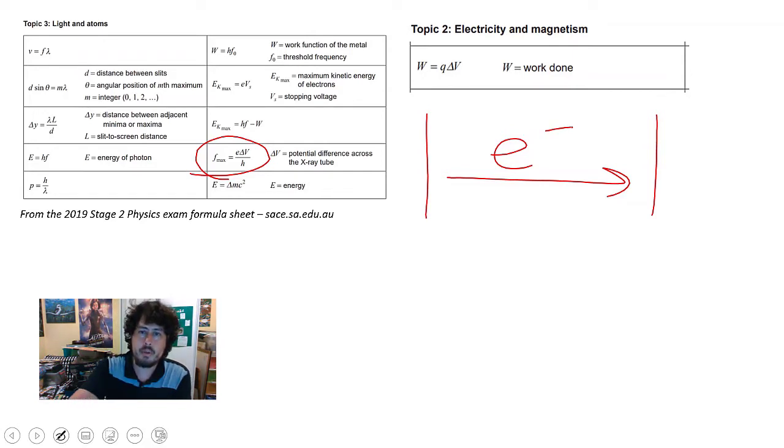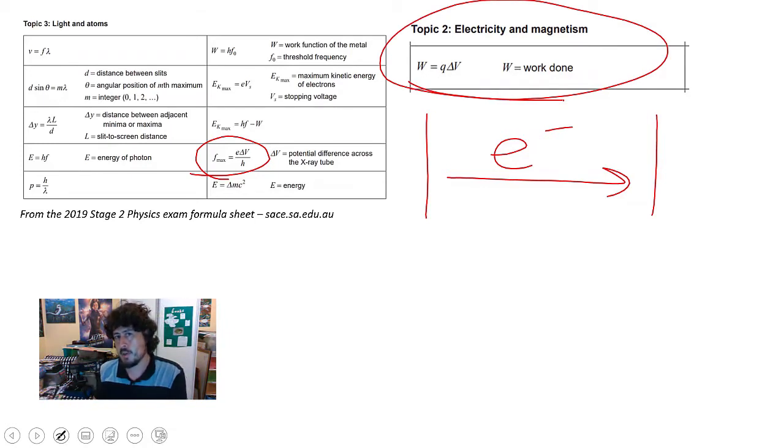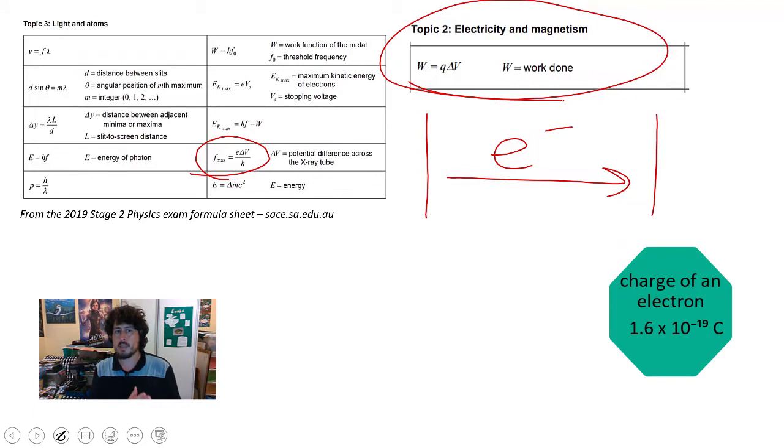Well, you see here this borrowed from electricity and magnetism, work is equal to the charge times the change in voltage. There's a difference between Q and E in the two formulas given that when we're talking an x-ray tube, we're only talking about electrons, so that the E represents the charge on an electron, which is 1.6 by 10 to the negative 19 Coulombs.